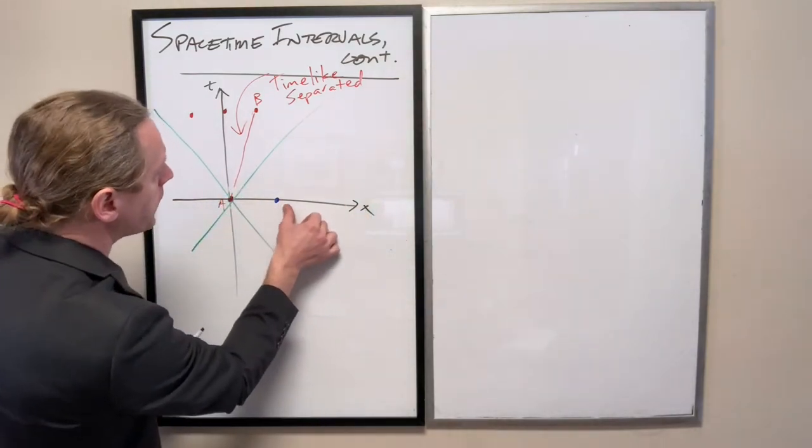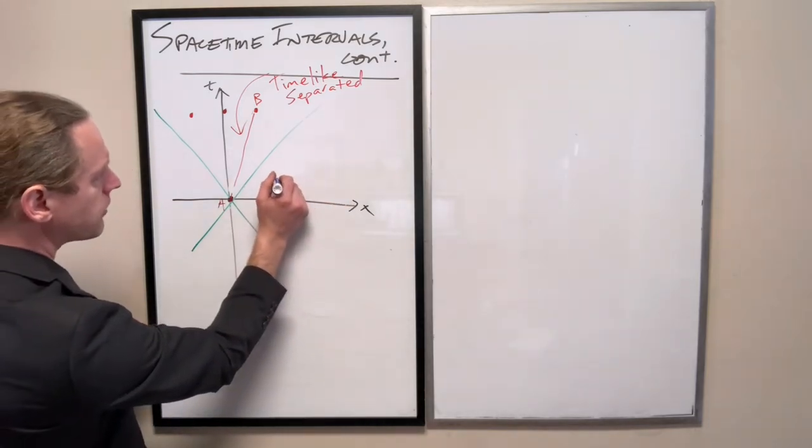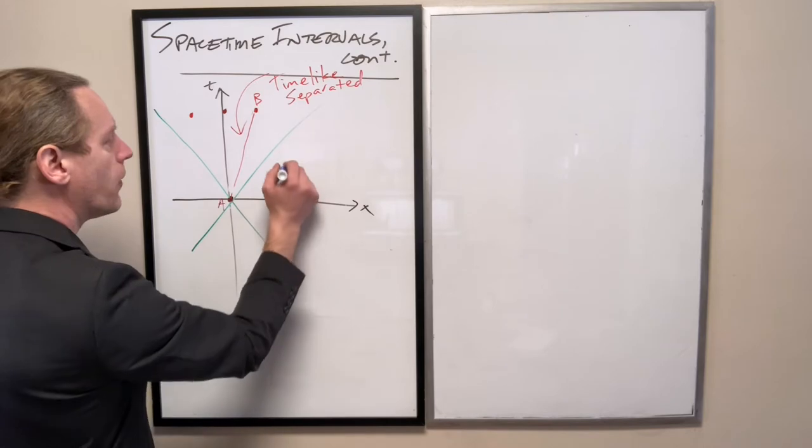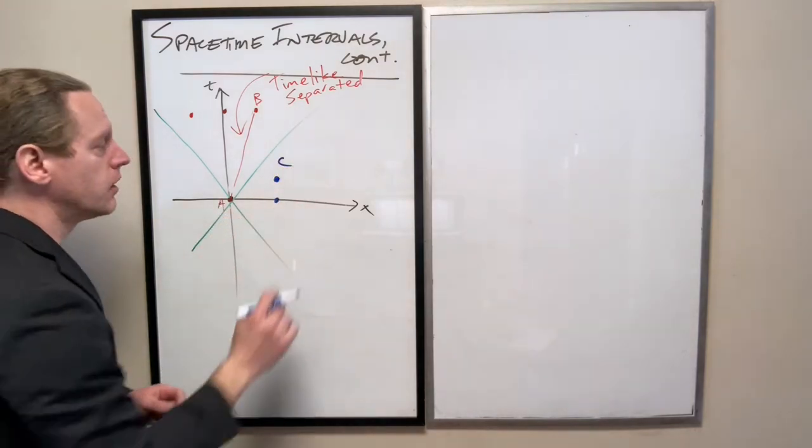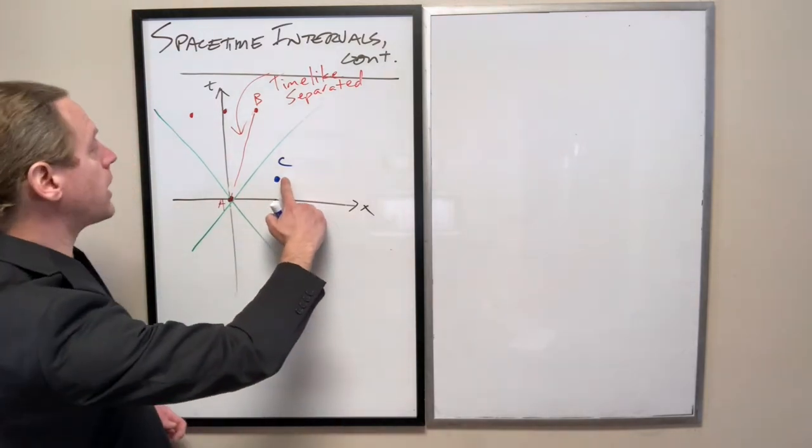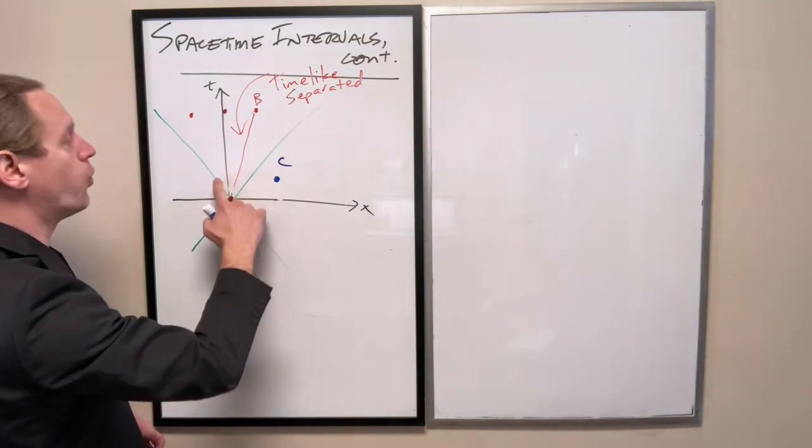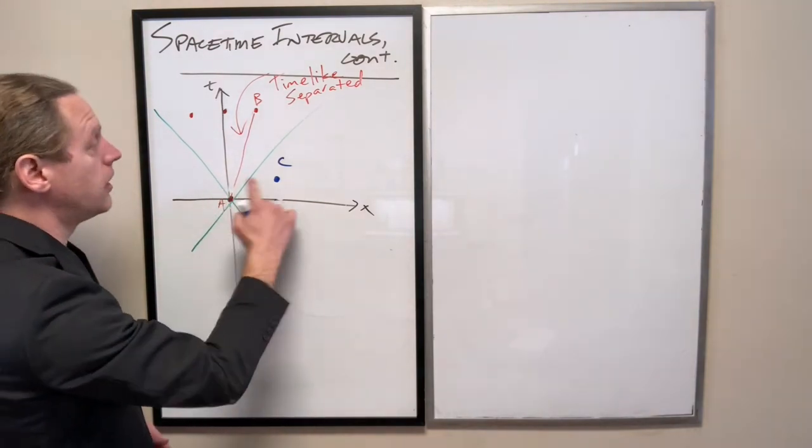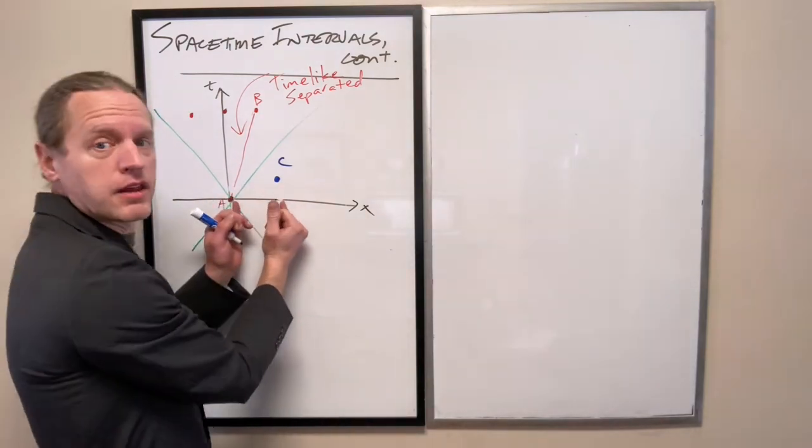Now if I look at some other event outside the light cone, not necessarily on the x-axis, let's look at it right here. If I write this as event C and that's still event A, we now have a slightly different case. Event C happens slightly later than event A, maybe one second later. So event C is separated by a little bit of time but by a lot of space.